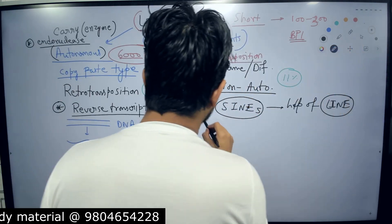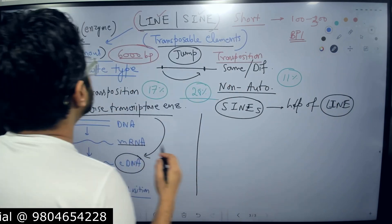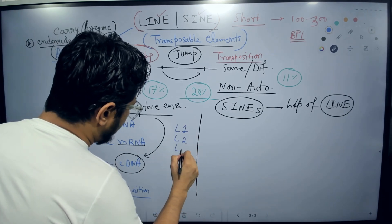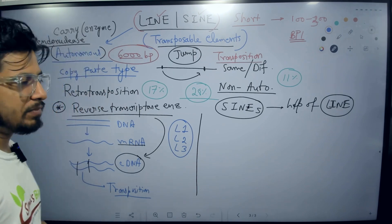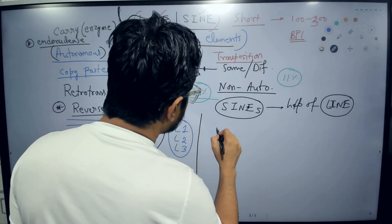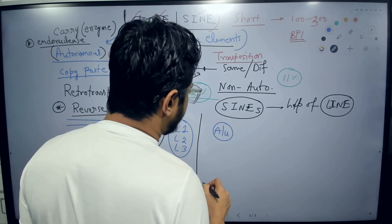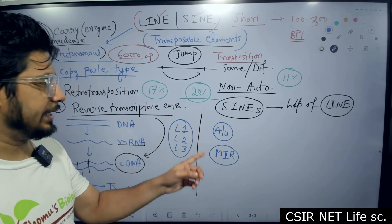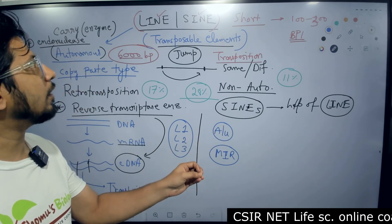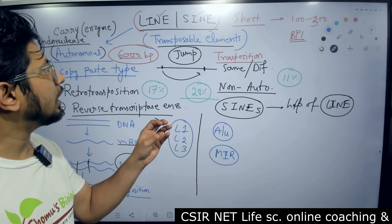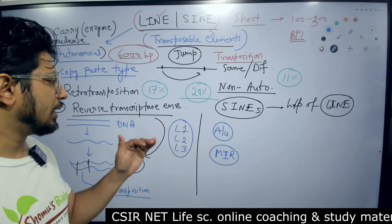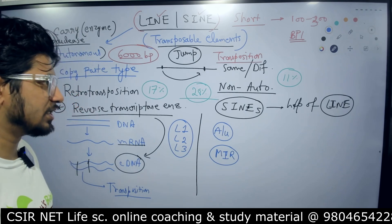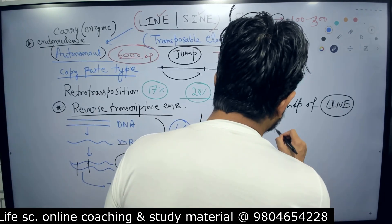What are the examples? For LINEs, they are simply known as LINE 1, LINE 2, LINE 3 — written as L1, L2, L3. These are examples of long interspersed nuclear elements. For SINEs, they are termed as Alu elements and MIR elements. So Alu and MIR are part of short interspersed nuclear elements, while L1, L2, L3 are part of long interspersed nuclear elements.